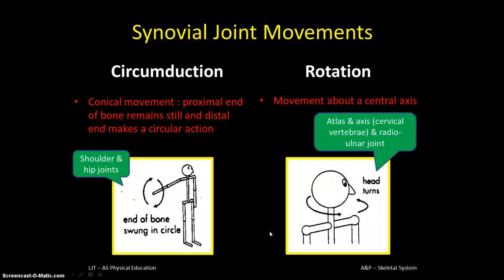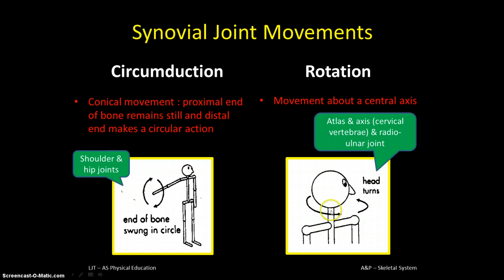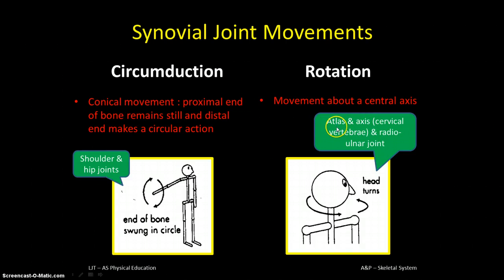Rotation is something a little bit different — you rotate around a singular axis, movement about a central axis, like when you turn your head to the side to look somewhere, which happens in many sports. You can see that the two top vertebrae of your spine — the atlas and the axis — allow rotation, as does your radioulnar joint, not shown in the picture here, but in your forearm, which allows a screwdriver-type action.